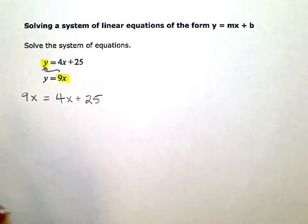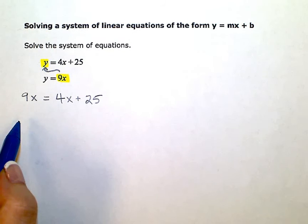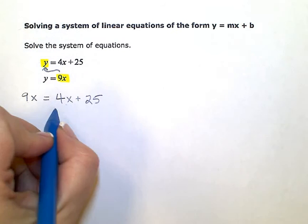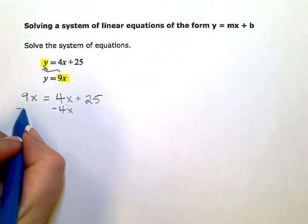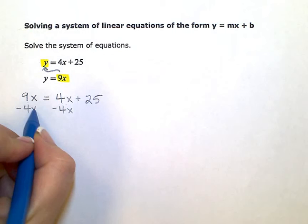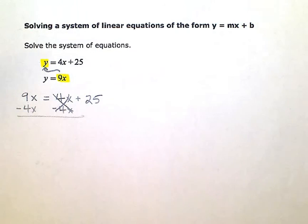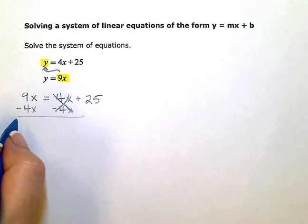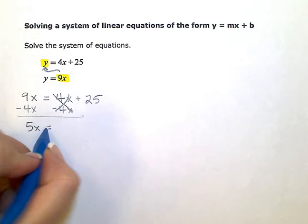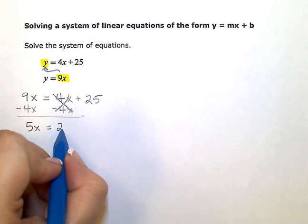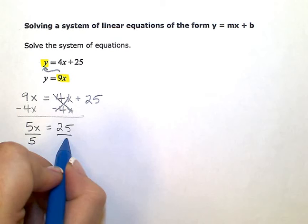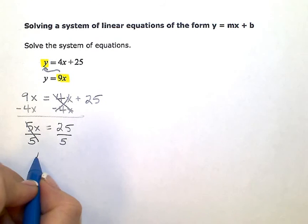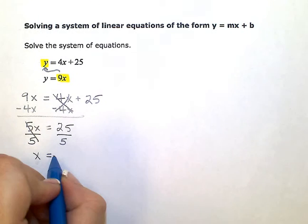And then I can just solve this equation for x. So since I have variable terms on both sides, I need to zero out one of those terms and then balance the equation by doing the same operation on the other side. So I zeroed out the 4x term on the right. And then when I simplify, I'm left with 5x equals 25. Then I'm going to divide my coefficient and simplify again so x is equal to 5.